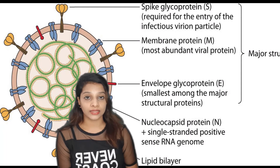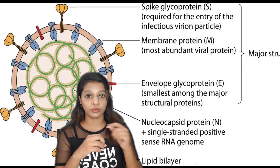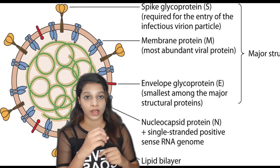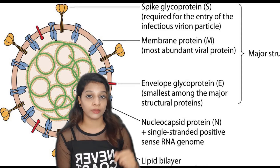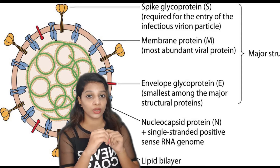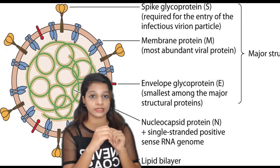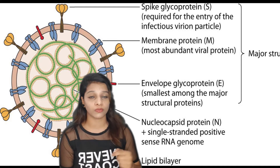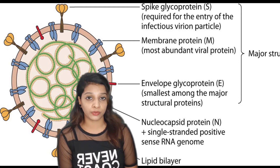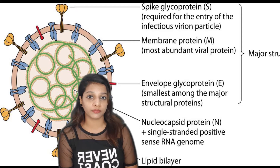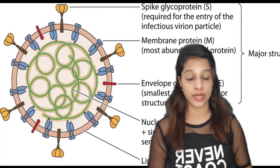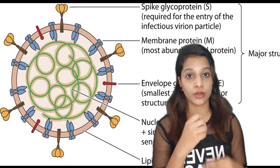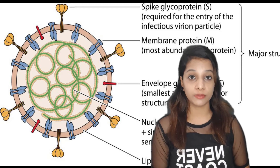Coronavirus has 4 types of proteins: there is a spike protein, there is a membrane protein, there is an envelope protein, and there is a nucleocapsid protein. These are 4 different types of proteins, and the key one is the spike protein.